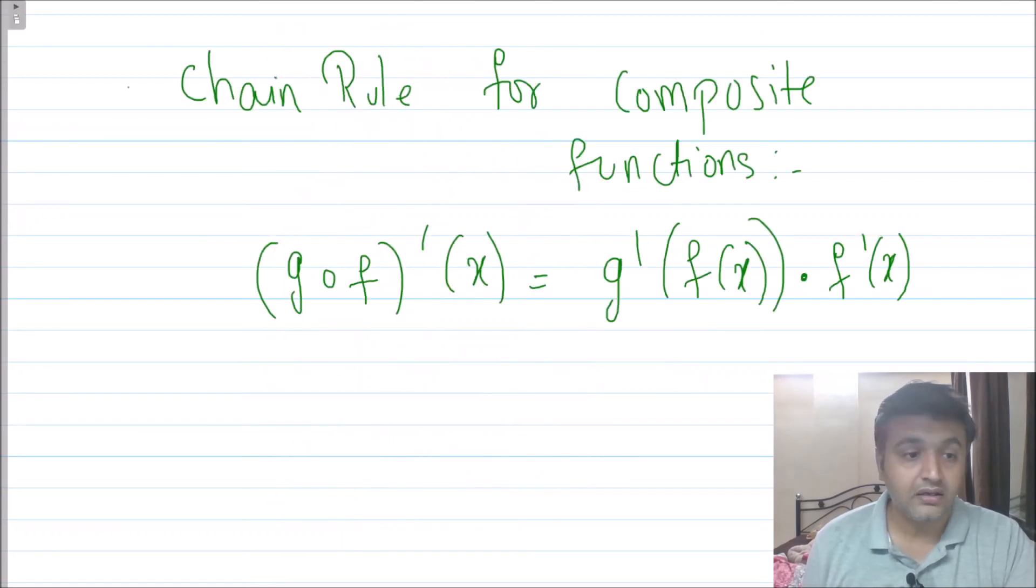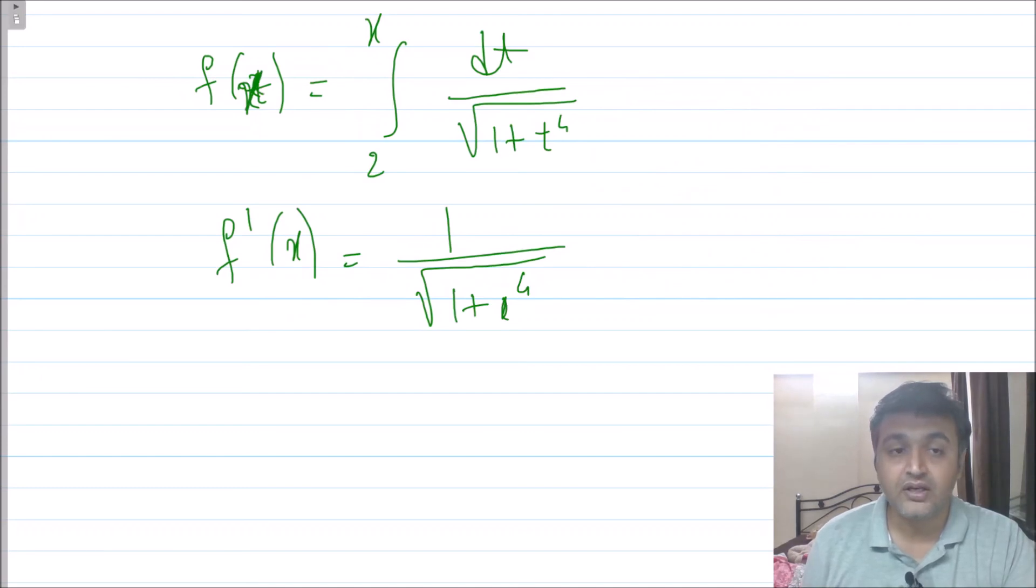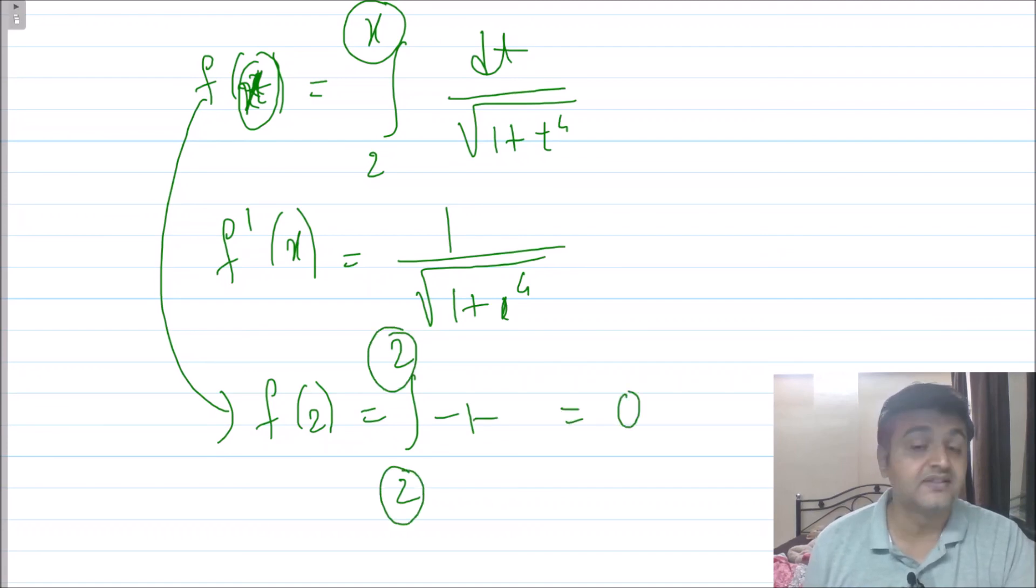If I take x equal to 2, what is my f of 2? Integration from 2 to 2. When the upper and lower limits are the same, your answer is always 0.